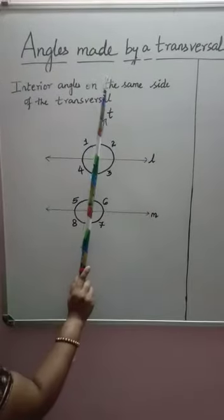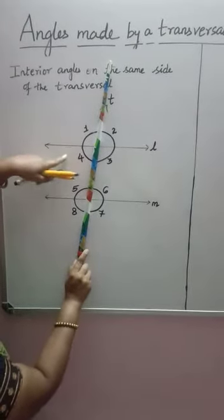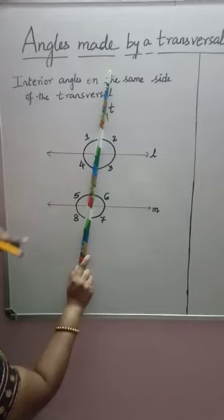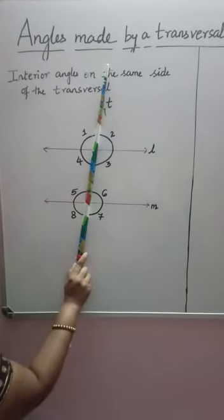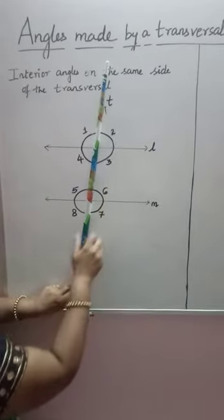And on the same side. So if I see that this is a transversal then the angles on the left side are 4 and 5. And on the right side are 3 and 6.